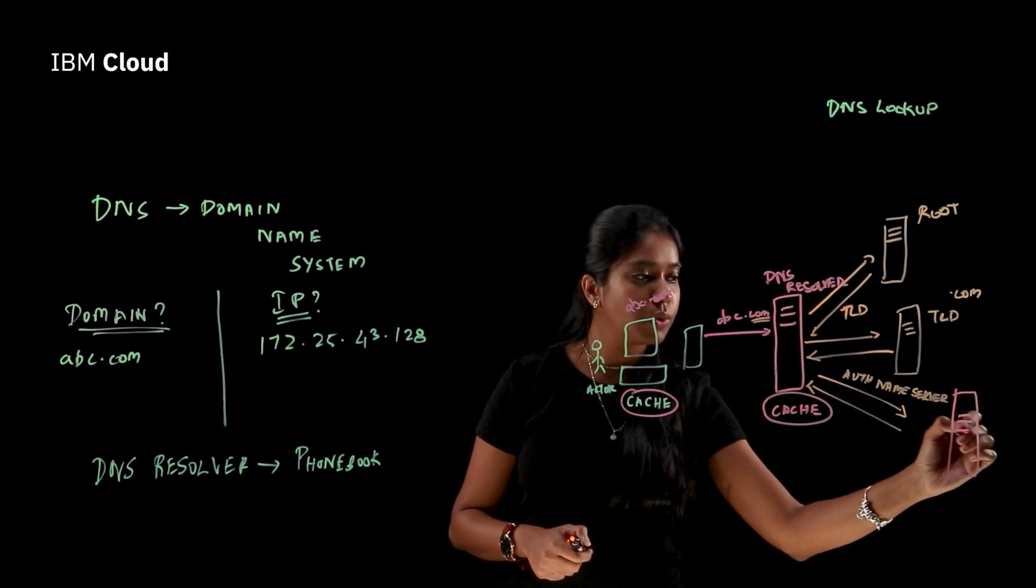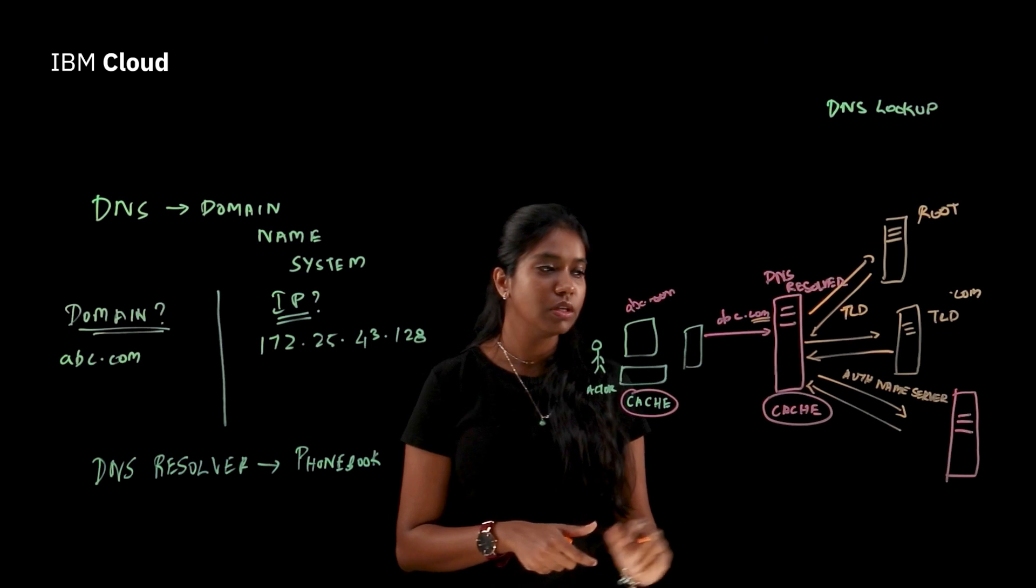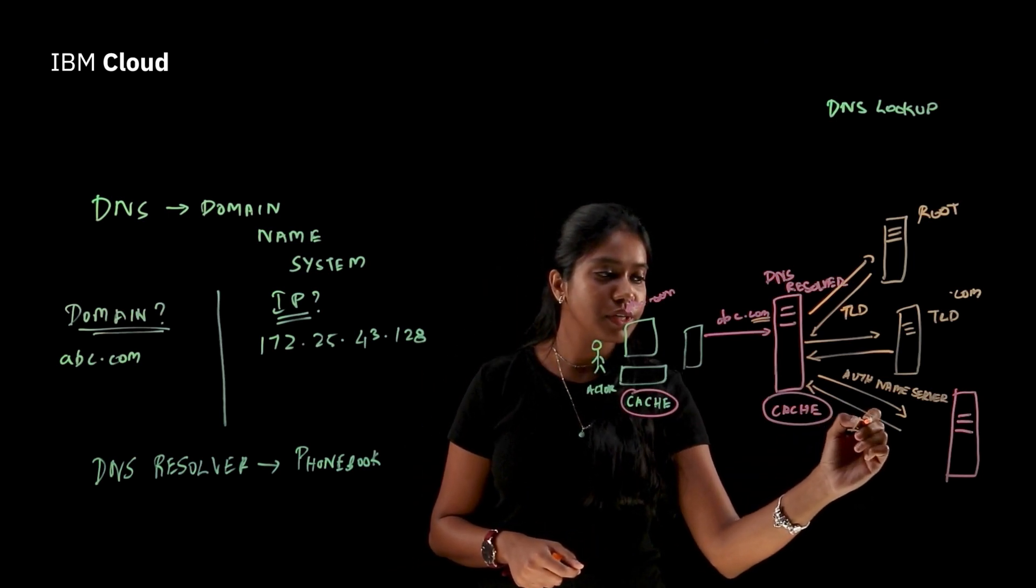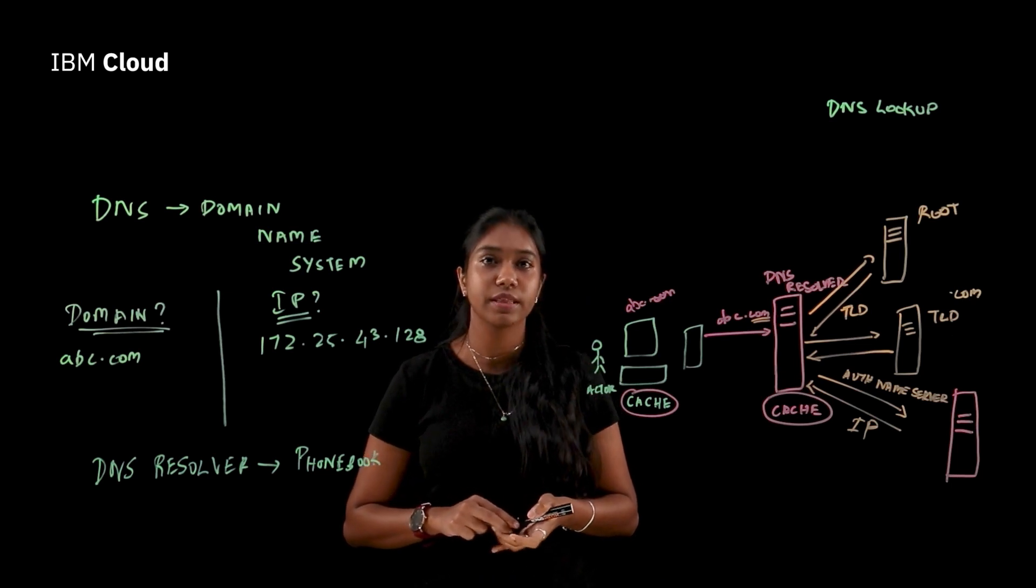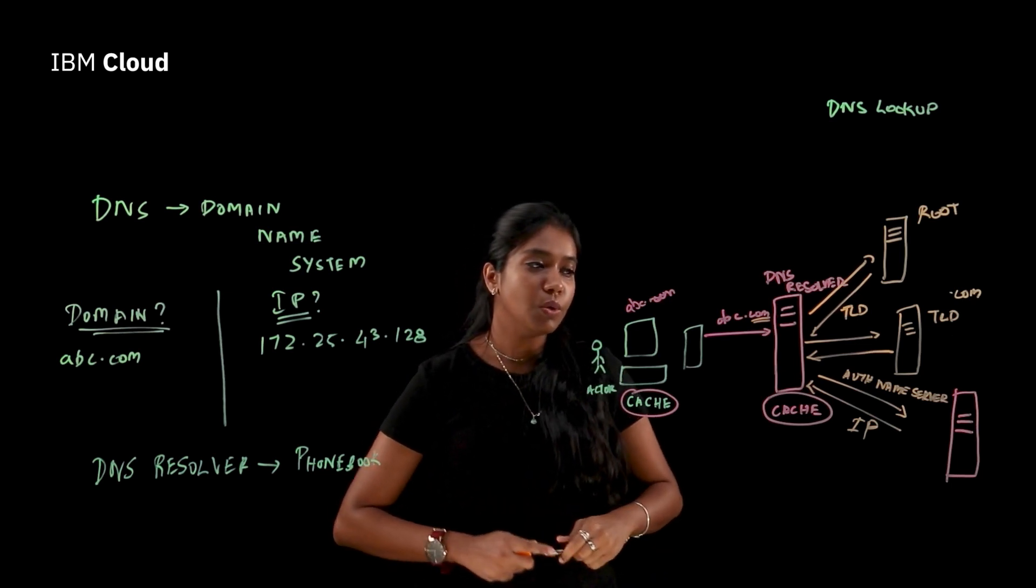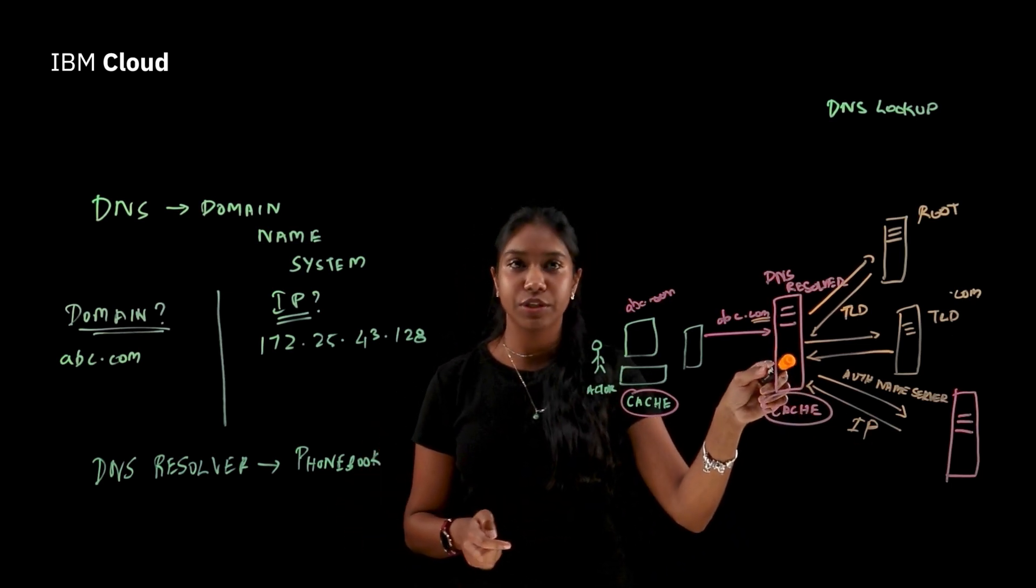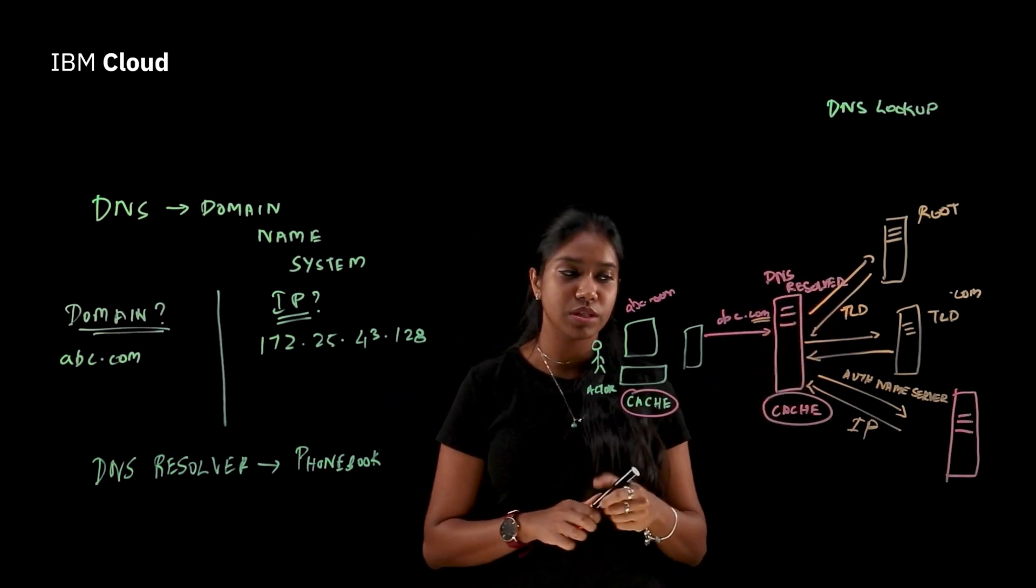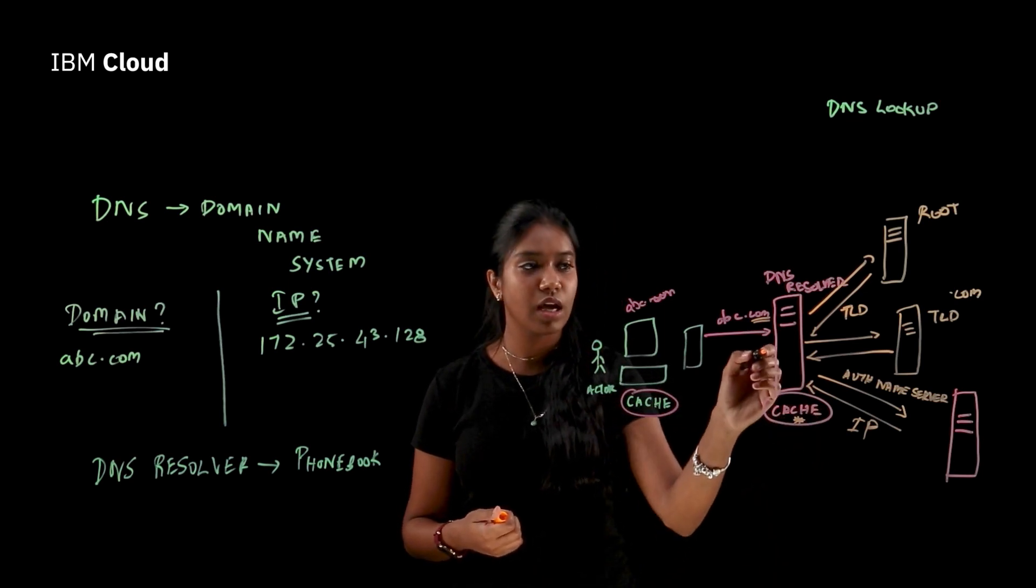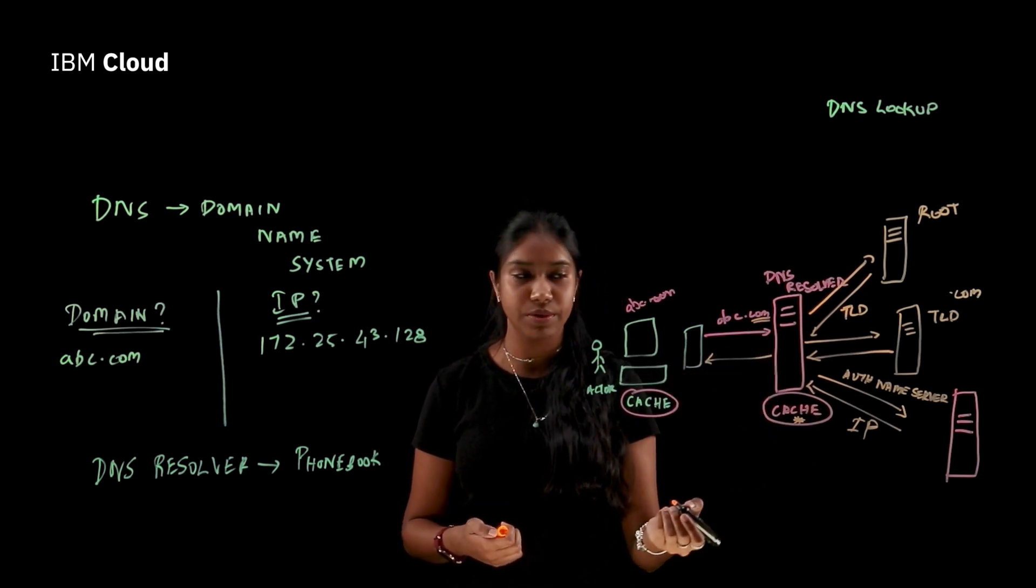So this is going to be your authoritative name server. And what the authoritative name server does, it sends back the IP address of the particular website that we are looking for. And now we get the IP address back to the DNS resolver. So the DNS resolver now stores it in the cache.